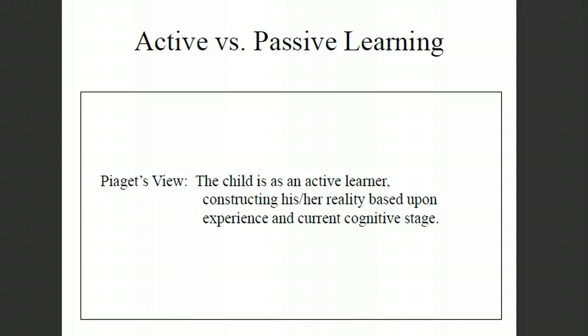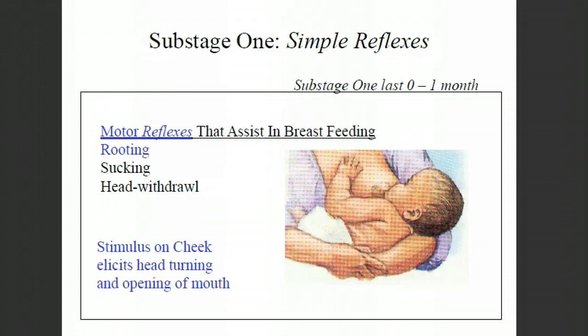Behaviorists felt that through rewards and punishments they can make a person into anything they wanted to. Piaget, in a very different approach, said that your biology helped determine what was possible, and that the child, him or herself, was an active learner within that environment, choosing what to explore.